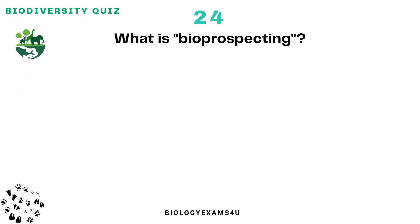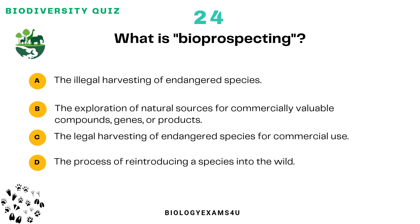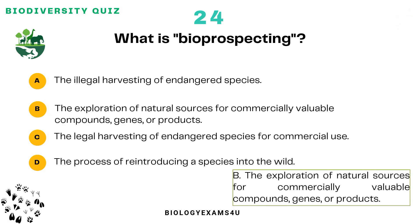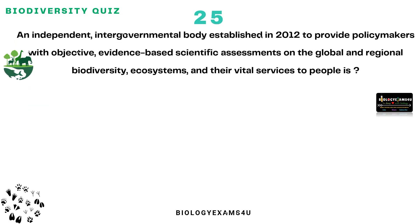Question number 24: What is bioprospecting? Option A: The illegal harvesting of endangered species. Option B: The exploration of natural resources for commercially valuable compounds, genes, or products. Option C: The legal harvesting of endangered species for commercial use. Option D: The process of reintroducing a species into the wild. The correct answer is: the exploration of natural resources for commercially valuable compounds, genes, and products.